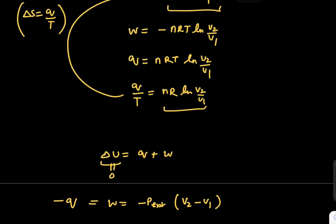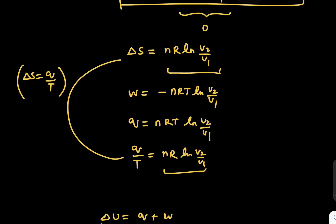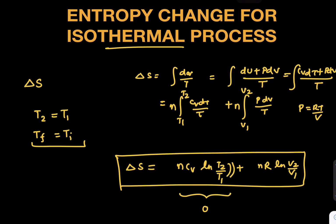We'll pick up certain questions where we deal numerically with these cases. If it is a case of free expansion, keep the work done zero, keep ΔU zero, Q will be zero, and you can comment about ΔS system based on Q zero. I hope you understood this video. Please keep liking, subscribing and sharing. Thank you.